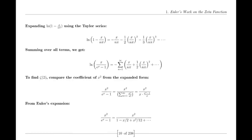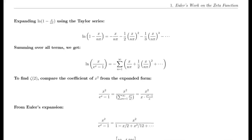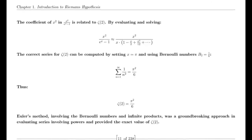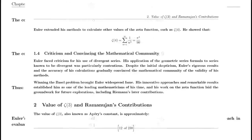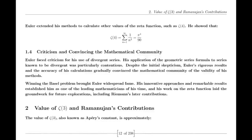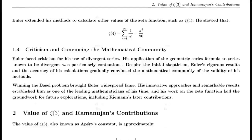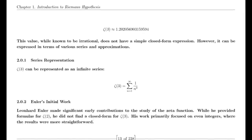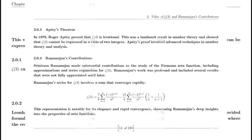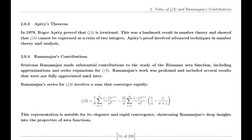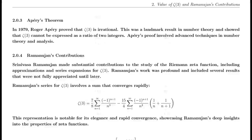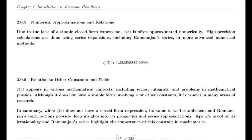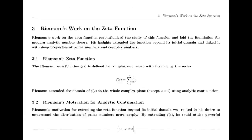Riemann's seminal paper. In 1859, Riemann published his seminal paper on the distribution of prime numbers, which introduced the zeta function and laid the groundwork for modern analytic number theory. This paper was a milestone in mathematical history. Riemann proposed that all non-trivial zeros of the zeta function lie on the critical line where the real part of s is one half. Despite extensive numerical evidence supporting the hypothesis, a formal proof or disproof remains one of the greatest challenges in mathematics.